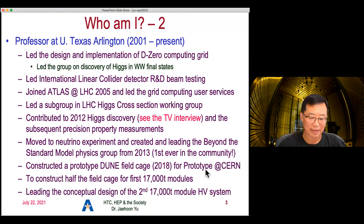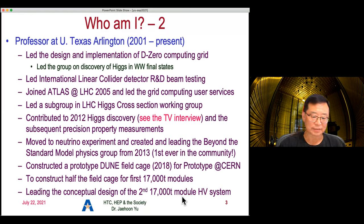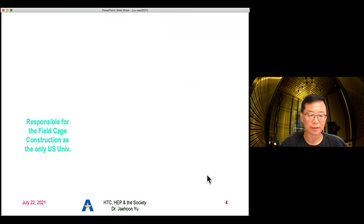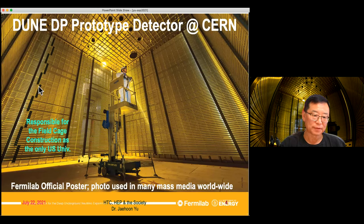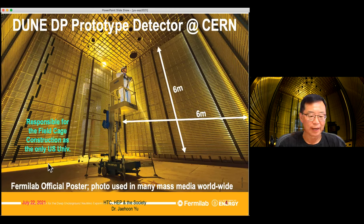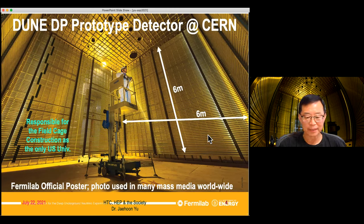I became a professor at the University of Texas at Arlington in 2001, and I'm now a full professor. Right now I am leading the conceptual design of the second 17,000-ton liquid argon module high voltage system for the DUNE detector. This is a photograph of the prototype detector I built at CERN — I was responsible for field cage construction, a six-by-six-by-six meters cube. We were the only US university to take part in this particular construction, and this photo has been used in many mass media worldwide, including newspapers in Switzerland.